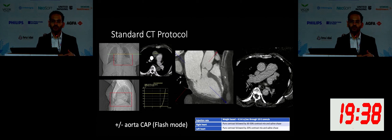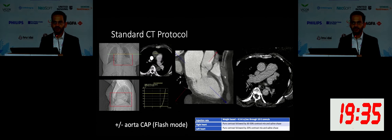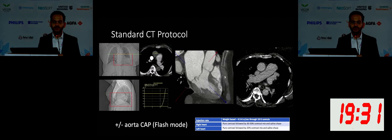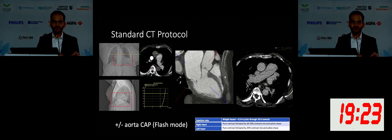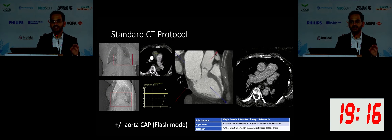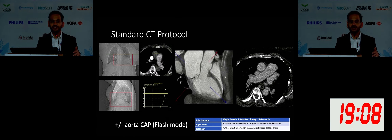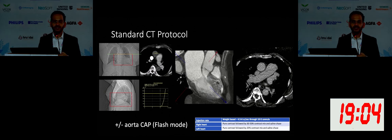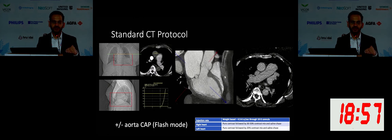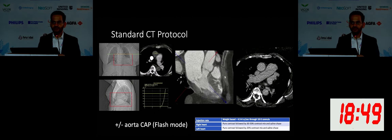We decide whether we need to opacify the right heart or the left — sometimes you need to opacify both sides. If you're only planning the left-sided heart, it's fine to use 5 cc a second, 60 cc of contrast, followed by 40 cc of saline. If you're trying to opacify both right and left or want slightly less opacification of the right side, then you would engage three types of injection: first, straight contrast, followed by a contrast-to-saline mix of 40% contrast and 60% saline, followed by a 40 cc saline flush.